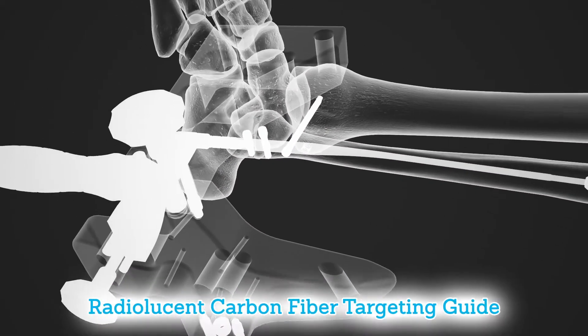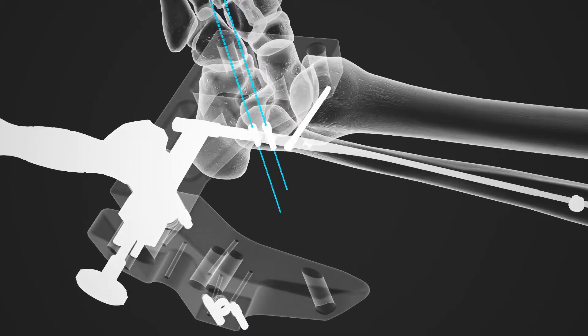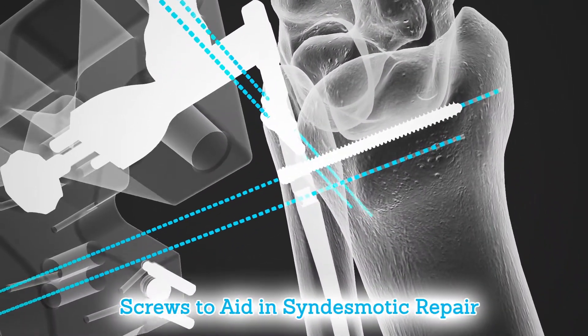The radiolucent carbon fiber targeting guide in the system is designed to aid in proper placement of interlocking screws in the nail, including screws intended to aid in syndesmotic repair.